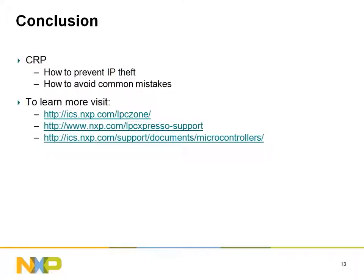This concludes the second module of the debug tools, tips, and tricks series. With it, you should be able to successfully implement code read protection in your designs to prevent the theft of your intellectual property. In the event that you don't want to use code read protection, you can make use of a modified scatter file to still ensure that it is not inadvertently enabled. To learn more, follow the links listed below. And as always, thanks for watching.